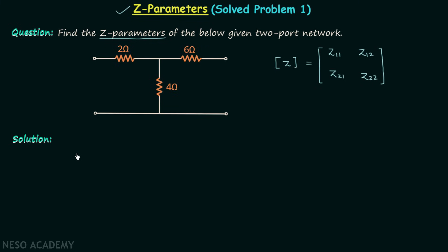In step number one we will assign the currents in all the branches of the network. I1 is the current in the first branch, I2 is the current in the second branch, and at the node applying KCL we have I1 plus I2 as the current in that branch. V1 is the voltage between the input terminals and V2 is the voltage between the output terminals.